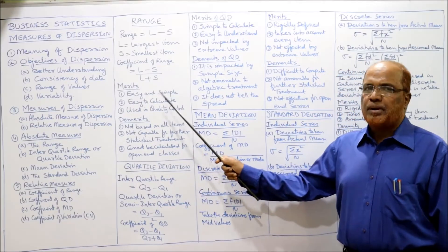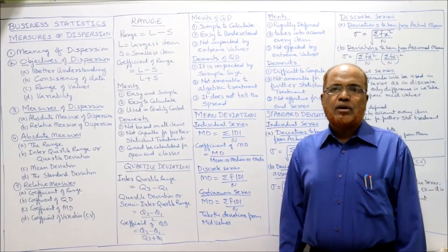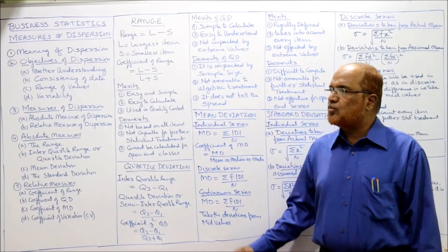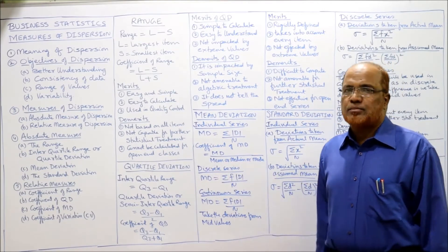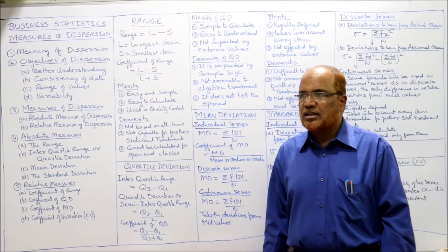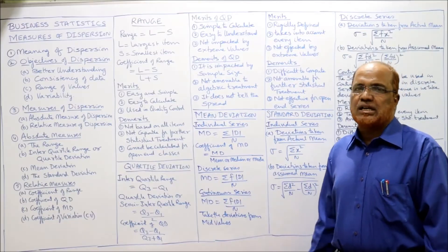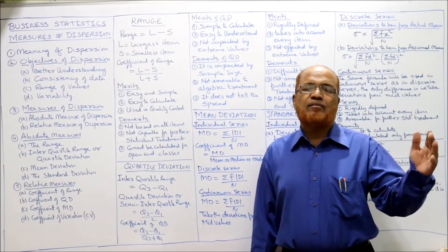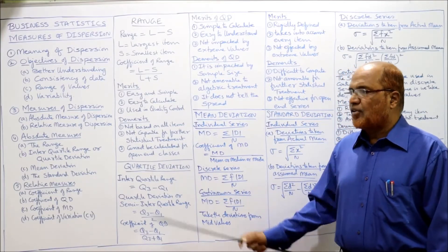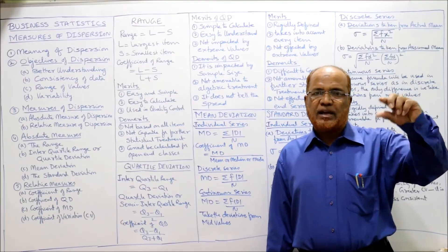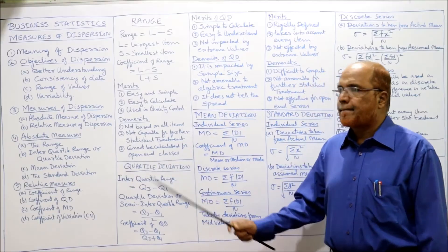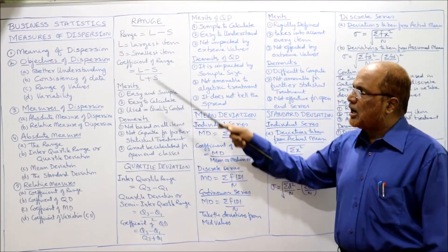Merits of range: it is easy and simple to calculate and is used in quality control. In quality control techniques, range is commonly used. Demerits: it is not based on all items — range takes only two items, the highest and the lowest value, ignoring all other items. It is not capable of further statistical treatment, and it cannot be calculated for open-ended classes. If the class interval has open-ended classes, range cannot be applied. That is the complete explanation about range.